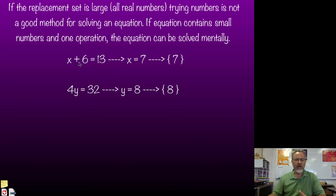So if I'm given the equation x plus 6 equals 13, well, what value could I put in for x that will make this equal 13? And I can kind of figure out, oh, well, I know, let's see, 6 and 5 is 11, 6 and 6 is 12, well, 6 and 7 is 13. So 7 would be my solution set.